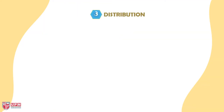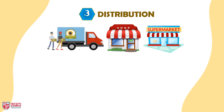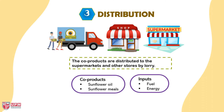The next stage is distribution. The co-products are distributed to supermarkets and other stores by lorry. The co-products are sunflower oil and sunflower meal, while the inputs are fuel and energy.